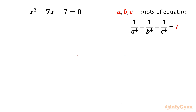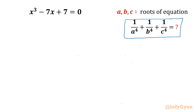Welcome to Infigyan friends. Today in this video we are going to take up one very interesting algebraic puzzle. If a, b, c are the roots of the cubic equation x³ - 7x + 7 = 0, then we have to simplify the given expression 1/a⁴ + 1/b⁴ + 1/c⁴.